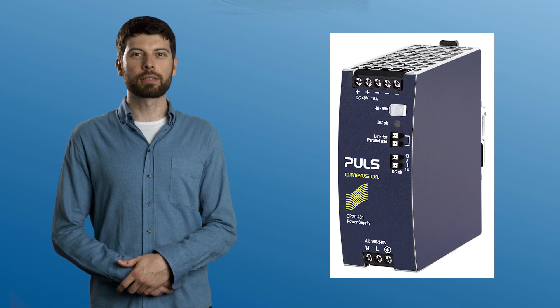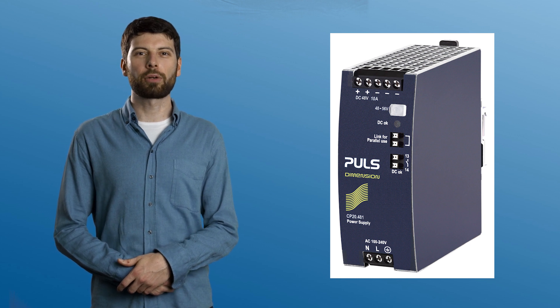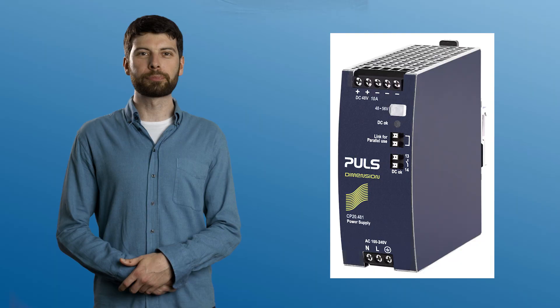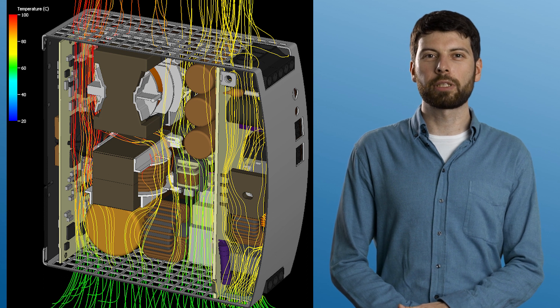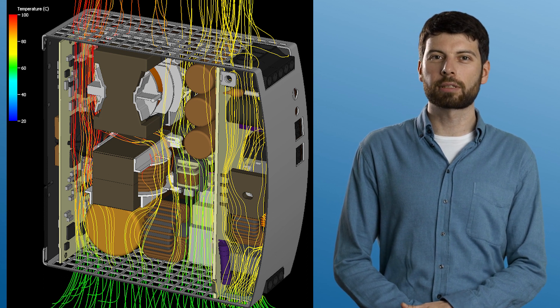A good example of this is our 480 watt power supply, the CP20. We achieved twice the lifetime compared to the next best follow-up power supply and the PULS unit is even smaller. By increasing the efficiency by 2% we achieved a 10 degrees Celsius temperature reduction.